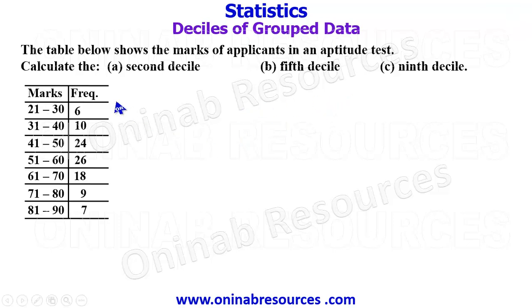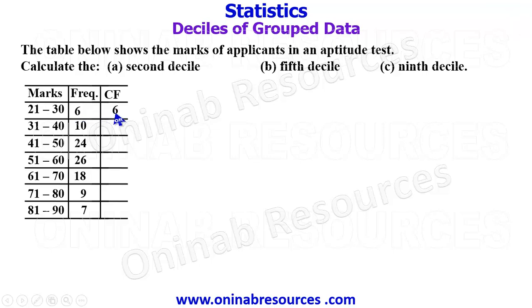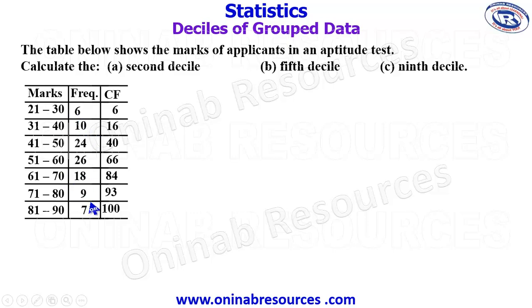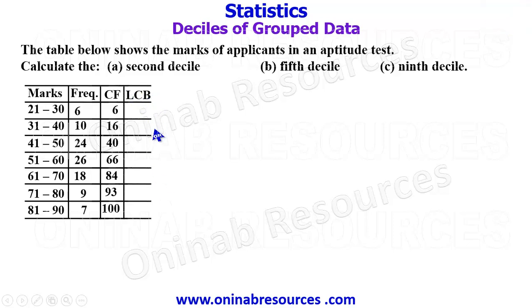Before we proceed, we'll expand this table by first getting the cumulative frequency. As the name implies, we accumulate the frequency. The first frequency is maintained at 6, then 6 plus 10 gives 16, 16 plus 24 gives 40, 40 plus 26 gives 66, 66 plus 18 gives 84, 84 plus 9 gives 93, and 93 plus 7 gives 100. So the population of the distribution is 100.